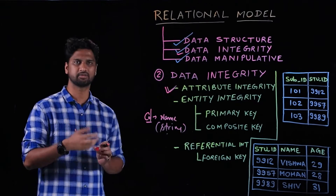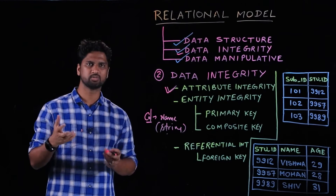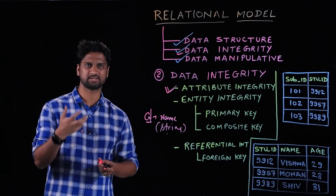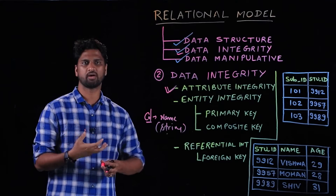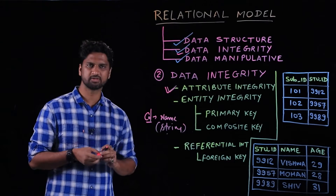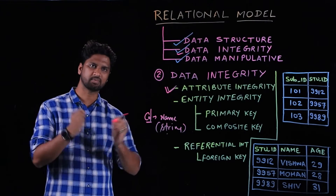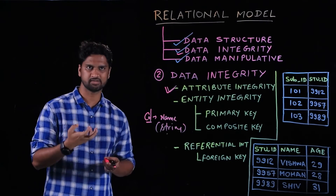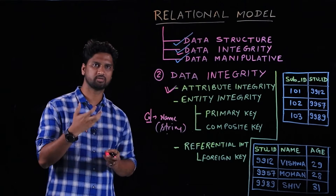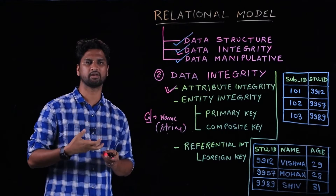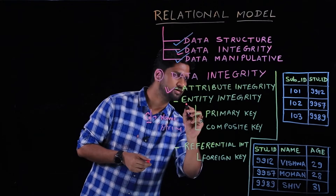There is also entity integrity. An entity is a real-world thing — for example, a person whose attributes we want to store in a table. In the relational world, when creating a tabular representation of any entity and trying to maintain relationships between entities, those relationships as well as the data in those tables should also be correct and should not violate certain conditions. That is what entity integrity covers.